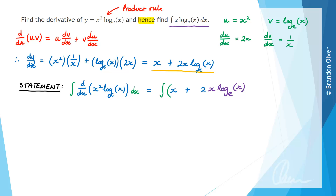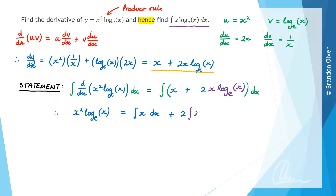Because we have an equals statement, we can integrate both sides with respect to x and still maintain equality. The integral of a derivative — since they are opposite operations — undoes to leave x squared times log e of x on the left-hand side, equal to the integral of x dx plus 2 times the integral of x times log e of x with respect to x. We split up the integral over the addition sign, which is allowed.